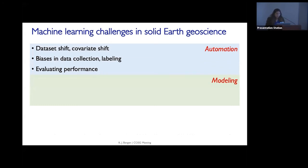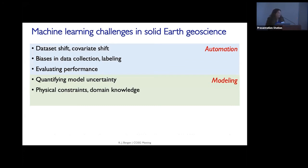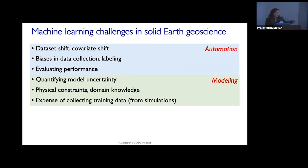Challenges in this modeling mode include quantifying model uncertainty — with traditional numerical methods you often have a good idea of what your uncertainty is, but that can be more difficult to determine from machine learning systems. There may also be physical constraints or domain knowledge you want to incorporate, which is tricky because most methods are designed to be fully data driven. There's also the expense of collecting data from simulations — to use machine learning to speed up simulations, you have to run a bunch of simulations first to train it. It works well if you already have a lot of existing calculations.